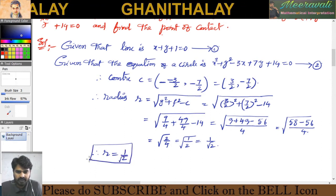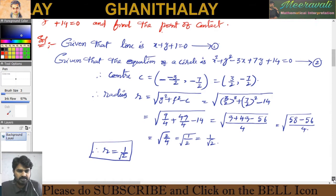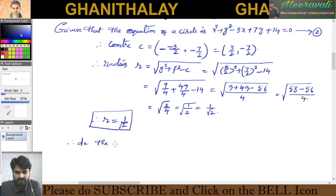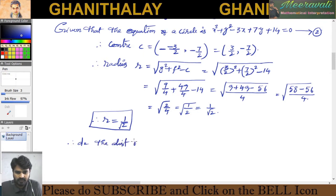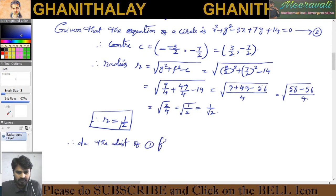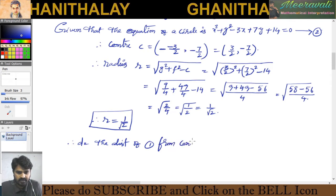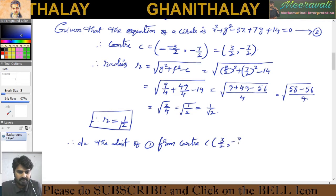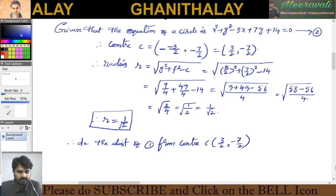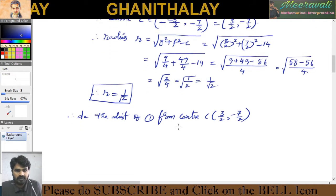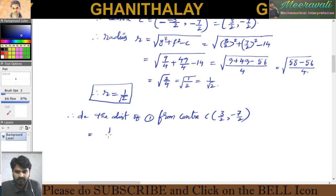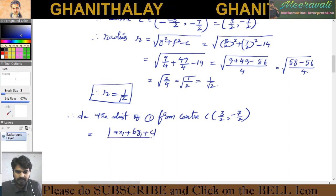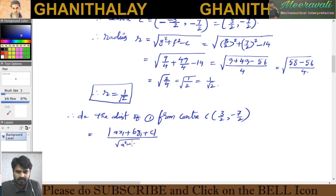Now we find D, the distance of line 1 from the center, which is 3/2 comma minus 7/2. The formula for the distance of a point from a line is: mod of (Ax₁ plus By₁ plus C) divided by the square root of A squared plus B squared.